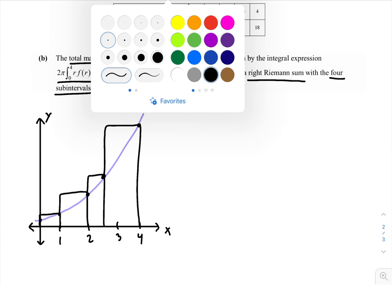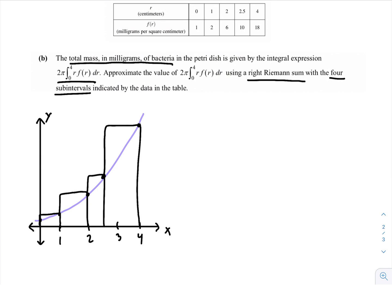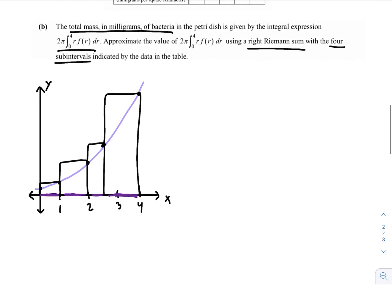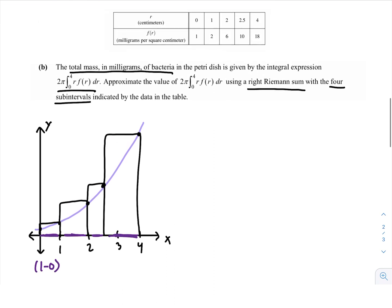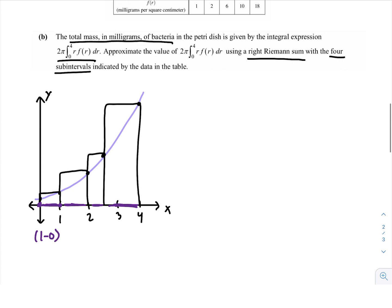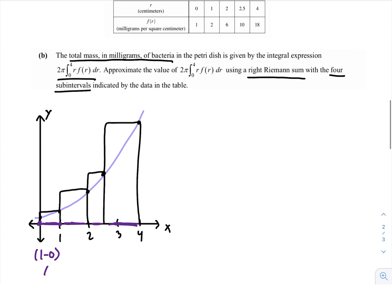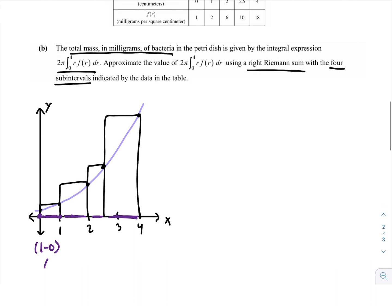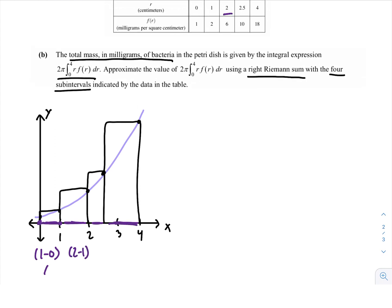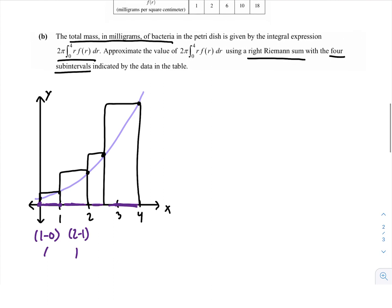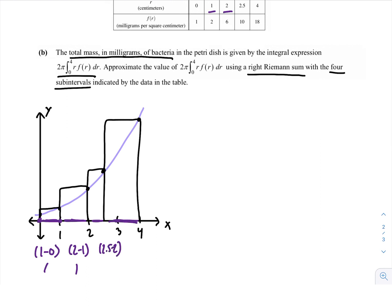And then one thing I like to do, just kind of simplifies the equations later on, is figuring out the width of the rectangle early on. So, the width of this first rectangle is just 1 minus 0. The first point is 0, the second point is 1, so this width is 1. So, the next rectangle, it's the same width as the first rectangle - it's 2 minus 1, which is 1. And then we keep doing that process. We have 2.5 minus 2, 0.5 is the width for that one. And then for our final rectangle, we have 4 minus 2.5, which is 1.5. So, we've got our widths figured out.